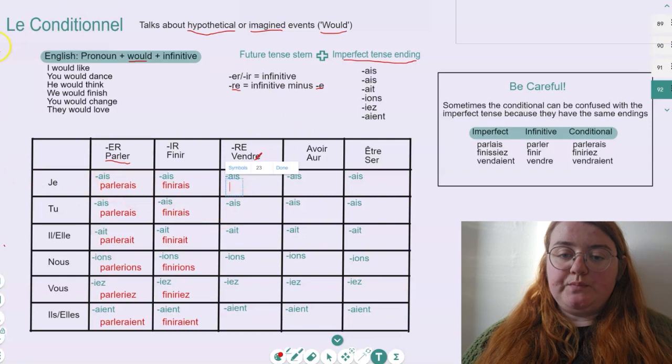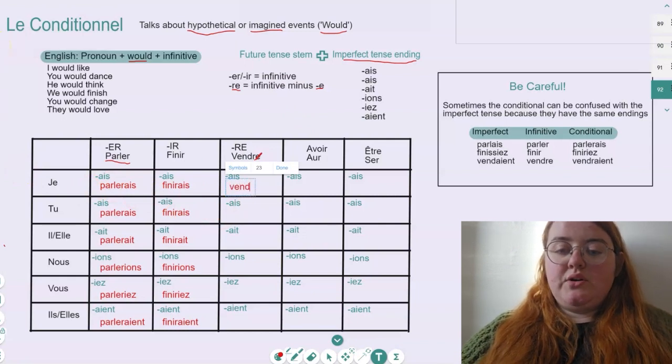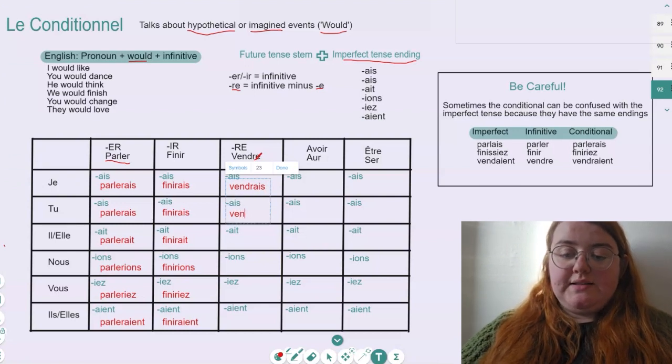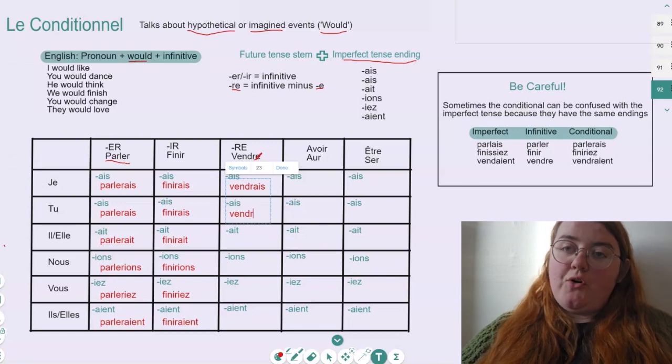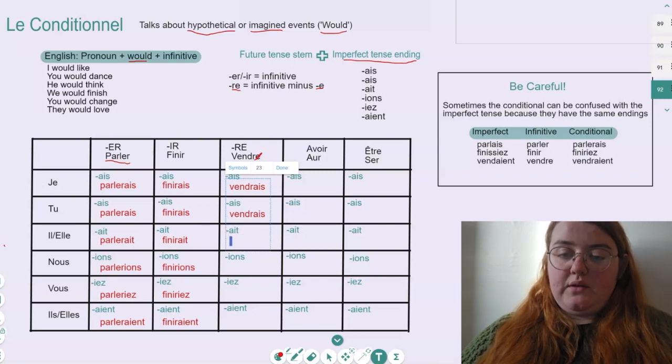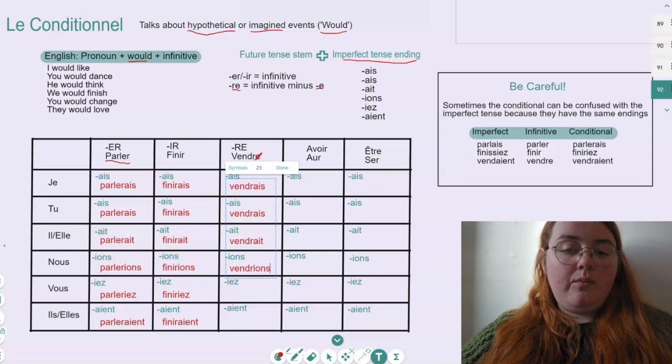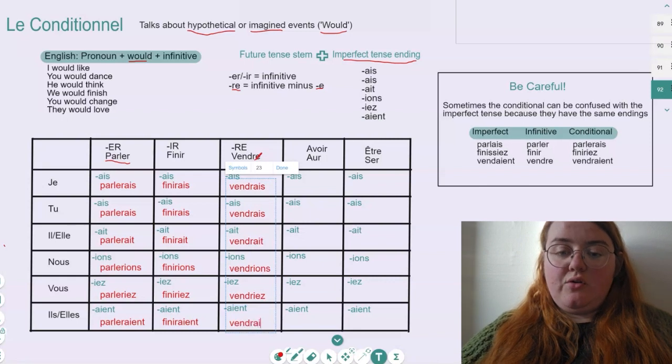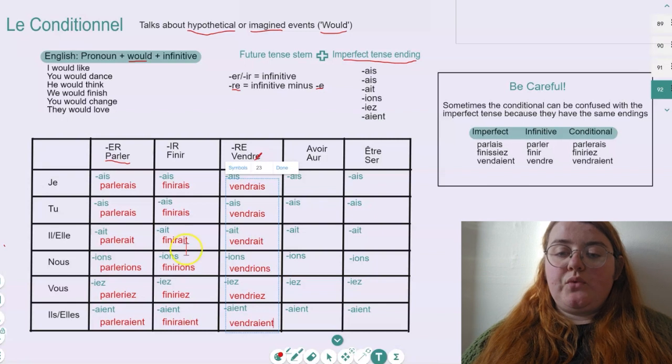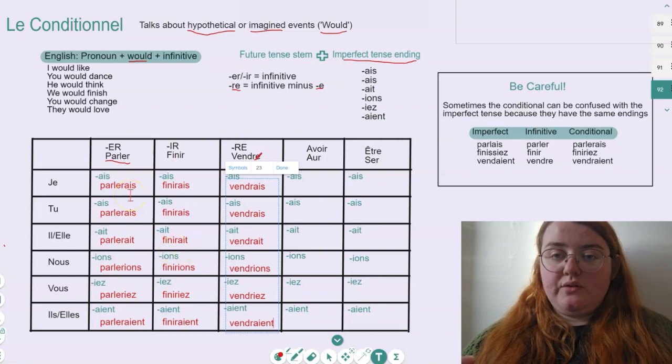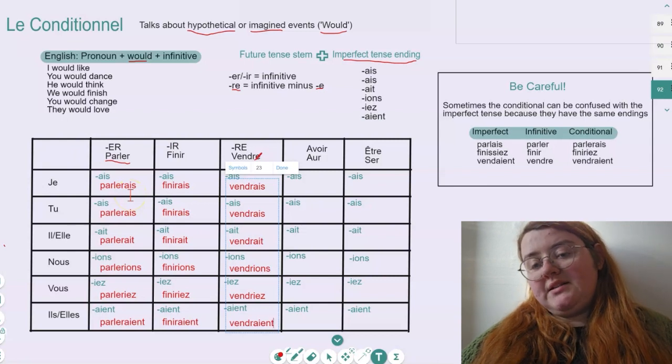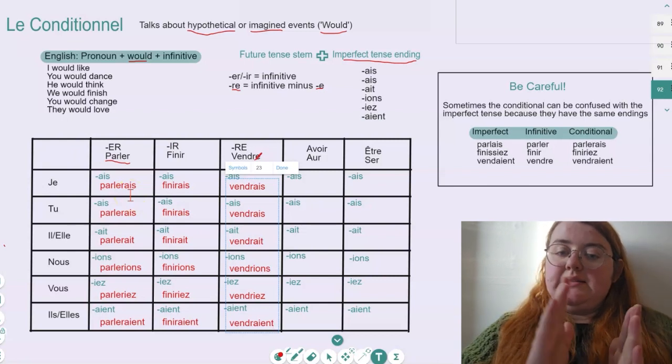So let's have a look at conjugating this one. We know our stem is going to be vendr, and then we add our ending, so we get vendrais. This is exactly the same for tu. We want vendr as our stem, and then we add our ending, vendrais. Again, vendrait, this time with a T. And then nous vendrions, vous vendriez, and finally ils vendraient. So super simple when it comes to your regular verbs. Either we want the infinitive or the infinitive minus E, and we add the ending. And those endings are the same for all three verbs.